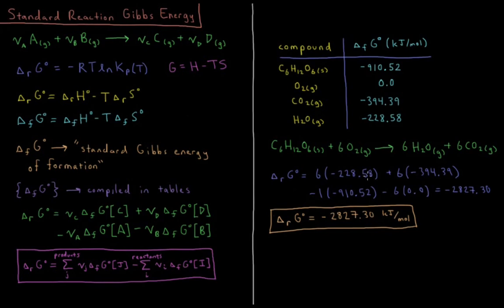So using this formula here, I do 6 times ΔfG° of water, minus 228.58 kilojoules per mole, plus 6 times minus 394.39 kilojoules per mole for CO2. Both of those are products, both of those have positive coefficients, minus 1 is the implied coefficient here for glucose of minus 910.52 kilojoules per mole.